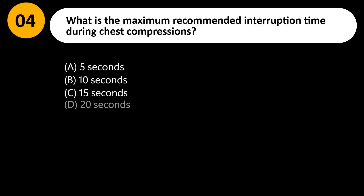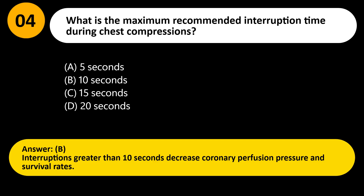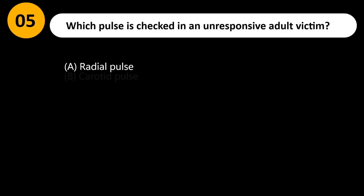What is the maximum recommended interruption time during chest compressions? A) 5 seconds, B) 10 seconds, C) 15 seconds, D) 20 seconds. Answer: B. Interruptions greater than 10 seconds decrease coronary perfusion pressure and survival rates.